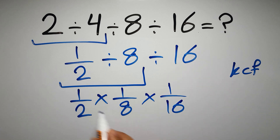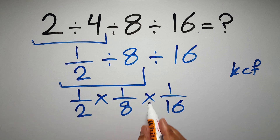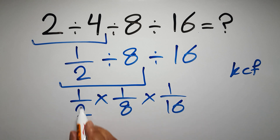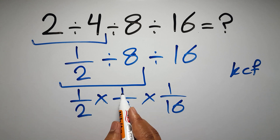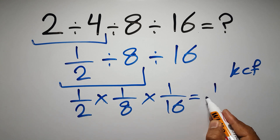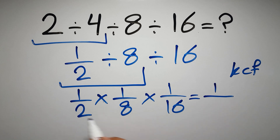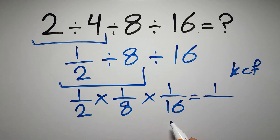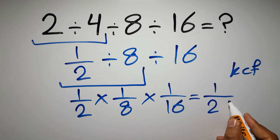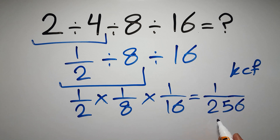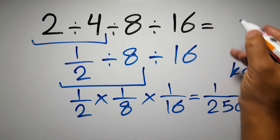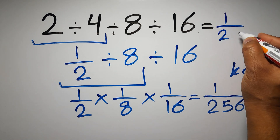We have 1 over 2 times 1 over 8, times 1 over 16. 1 times 1 times 1 gives us 1, and 2 times 8 gives us 16, and 16 times 16 is 256, so we have 1 over 256. This is our final answer to this problem — the correct answer is 1 over 256.